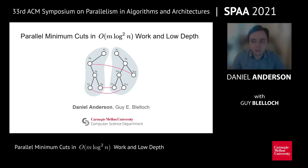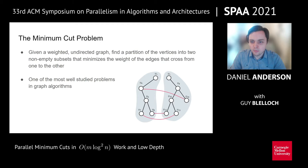Hello, today we're going to talk about our work on parallel minimum cuts in m log squared n work and low depth. I'm Daniel, and this is joint work with Guy Blalock. The minimum cut problem, arguably one of the most famous problems in graph algorithms and graph theory, is given a weighted undirected graph, we want to find a partition of the vertices into two non-empty subsets such that we minimize the total weight of all the edges that cross from one set into the other.